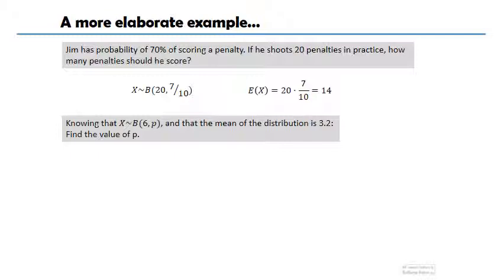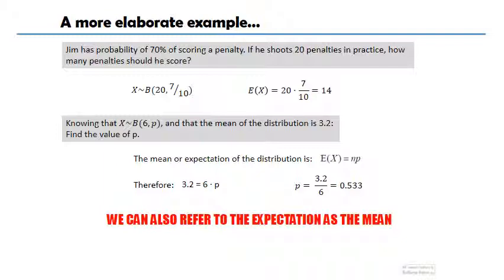Here's another example, which is interesting. Suppose that I know this is a binomial distribution, and I have 6 trials, but I don't know the probability. However, they tell me the mean of the distribution is 3.2. Here's something important: when they say the mean, they mean the expectation. So what I ultimately know here is that 6 times p is going to be 3.2. Hence, the probability is going to be 0.533. Sometimes they'll call the expectation the mean.